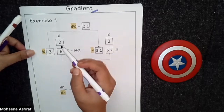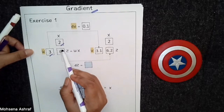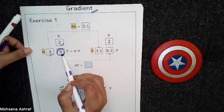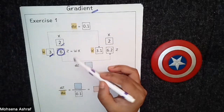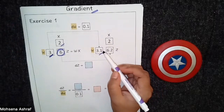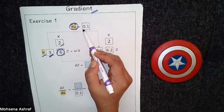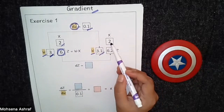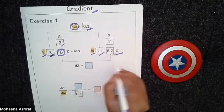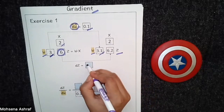So for the first exercise, let us assume that we have two variables x and w and we are doing a linear operation. The output is z = wx. So 3 × 2 gives us 6 as the output. And let's suppose that we update the value of w in the next step, so w becomes 3.1. The difference in the weight, dw, will be 0.1. If we do the linear operation again, 3.1 × 2 = 6.2. So the updated z is 6.2, and dz = 0.2.